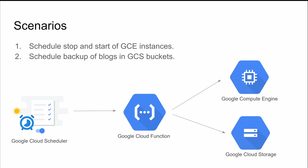So the scheduler will call the Cloud Function HTTP endpoint, and then the Cloud Function will trigger the APIs of GCE to shut down, start, or stop the instance. That's how you can achieve the first scenario. The second scenario is what we are going to discuss in this video.